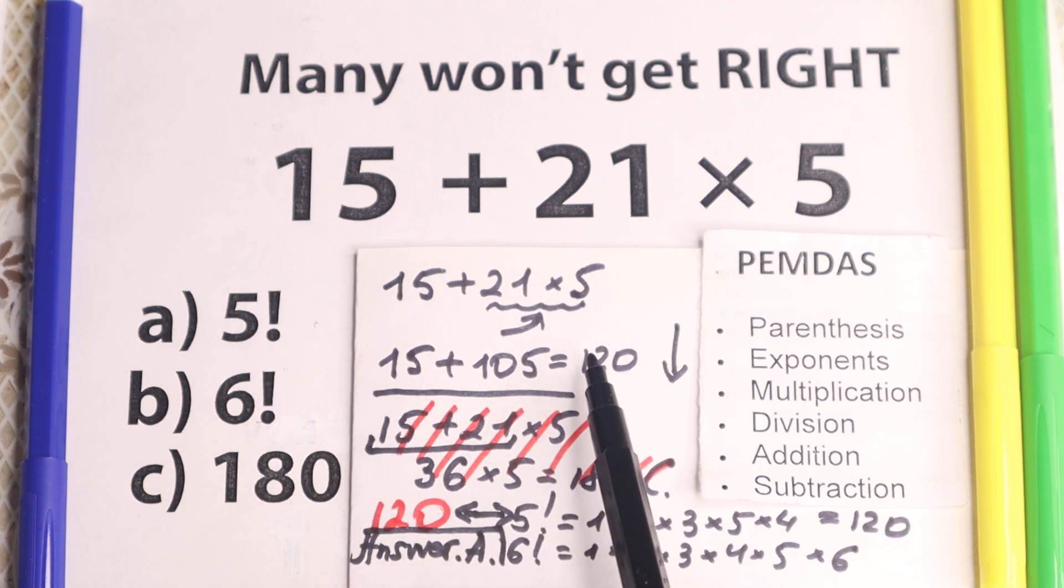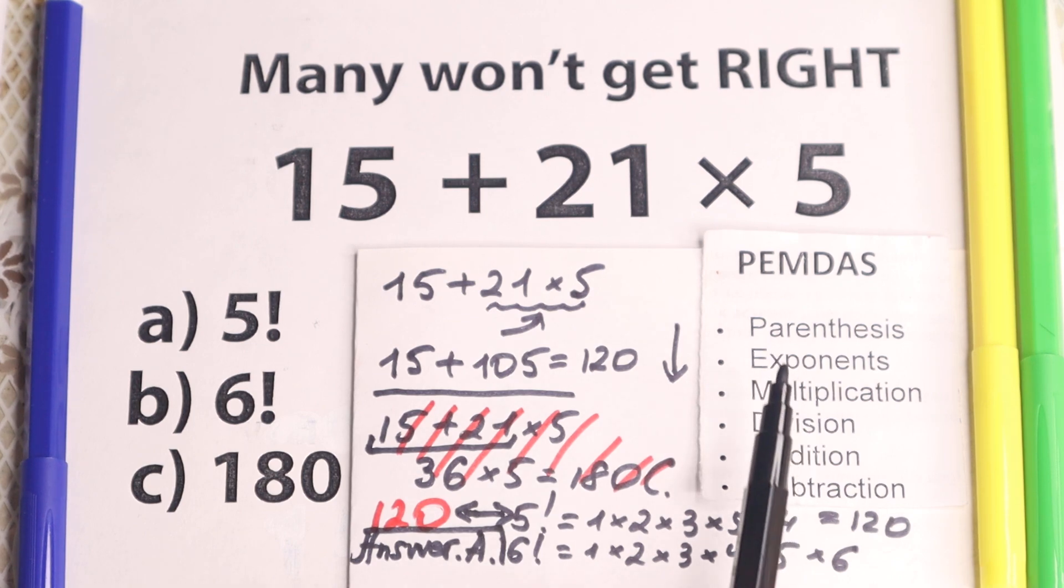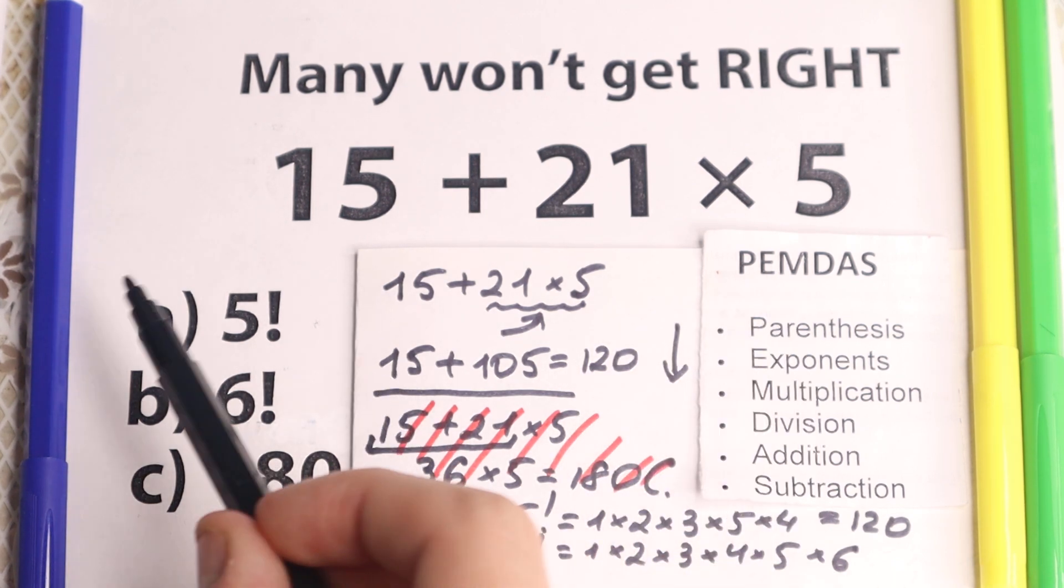But if we look closely to this question, 5 factorial is the same as our 120, according to PEMDAS, of course, the main thing is PEMDAS order, and this is a correct order, and then you find your option.